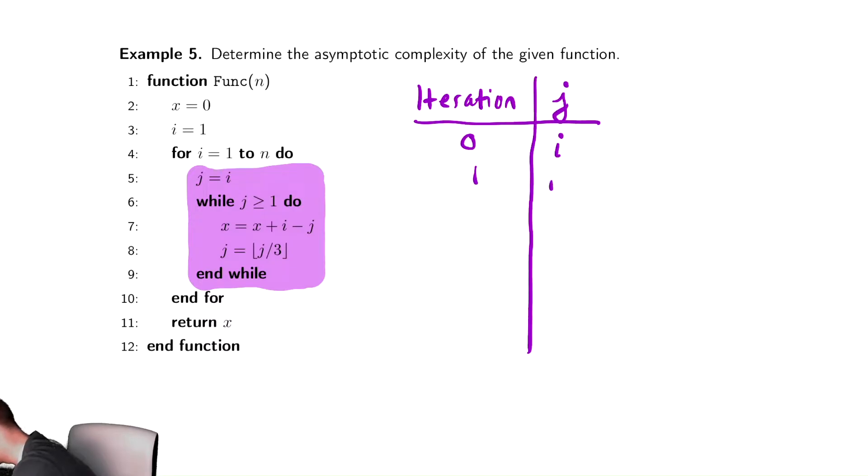After one iteration, j should be i divided by 3. After two iterations, it's i divided by 3 divided by 3, which is i divided by 3 squared. After three iterations, it's i divided by 3 cubed. After k iterations, it looks like i divided by 3 to the k.